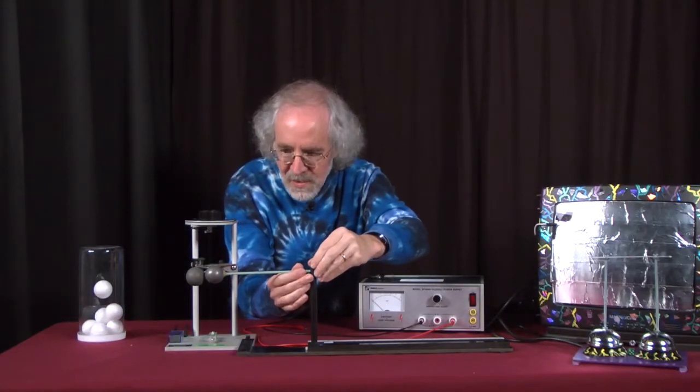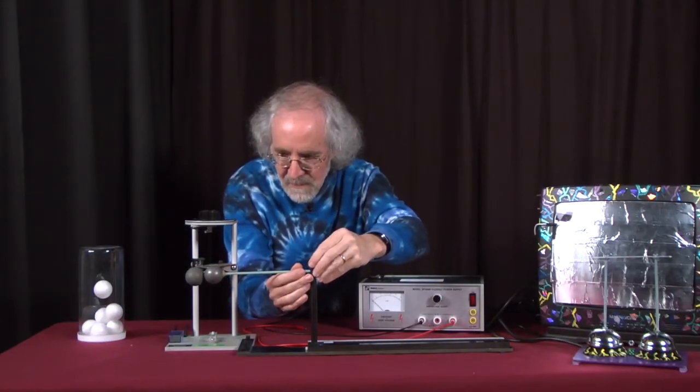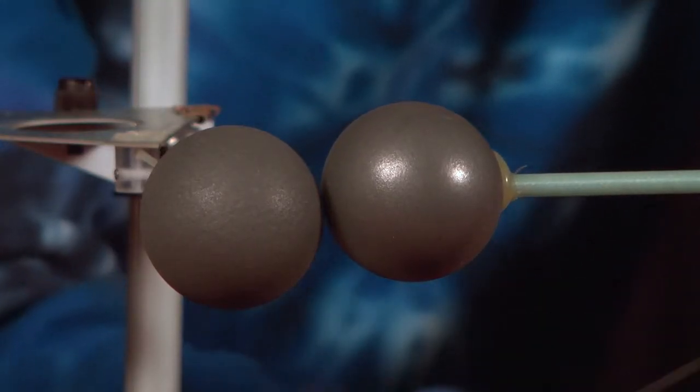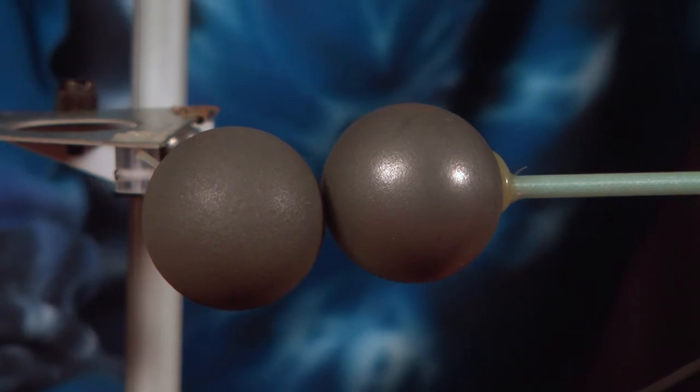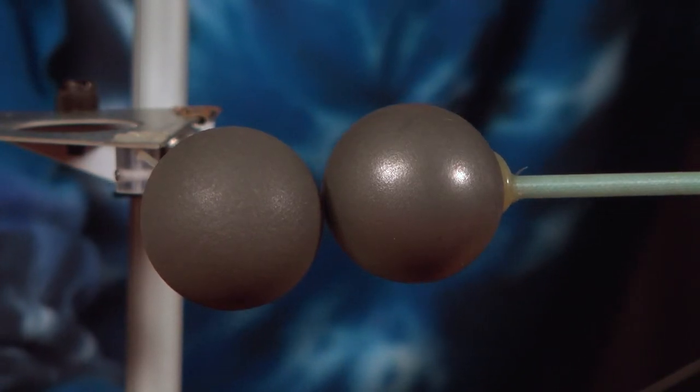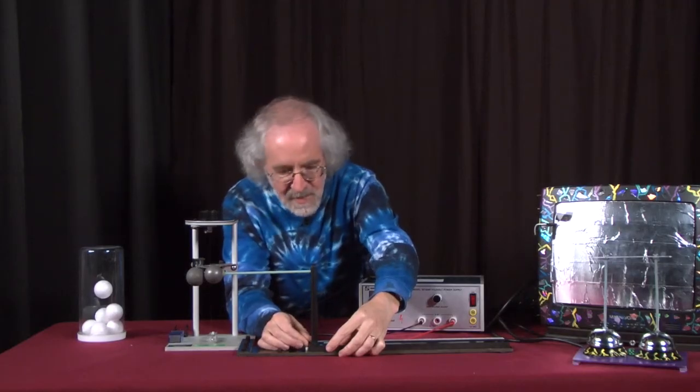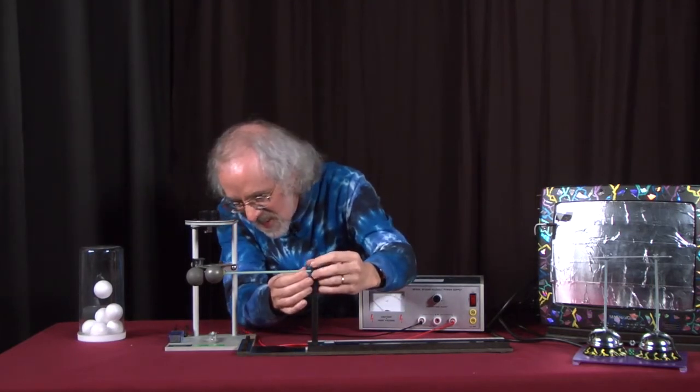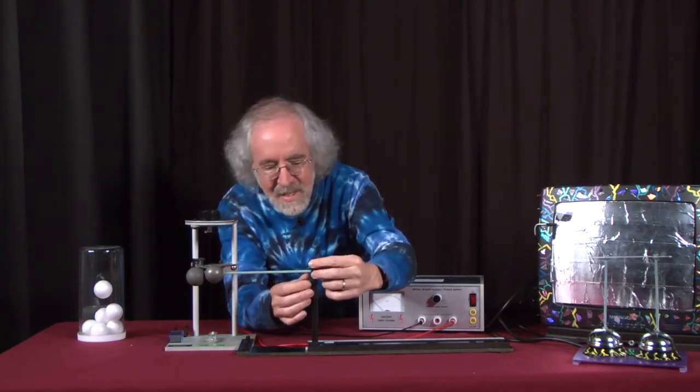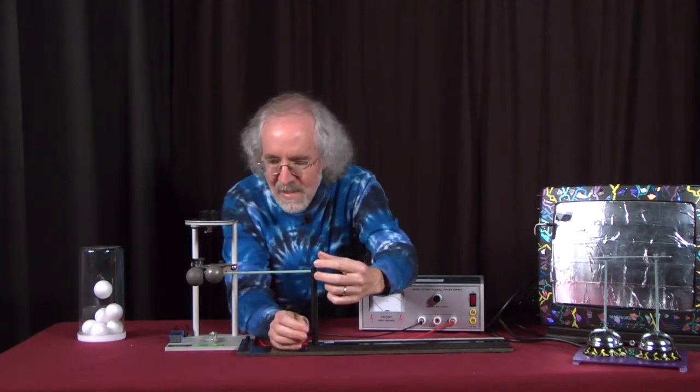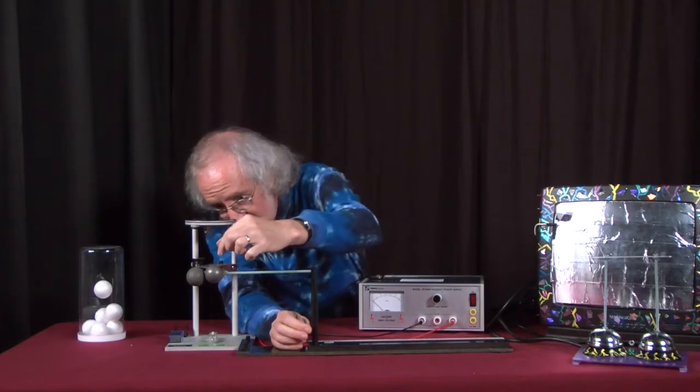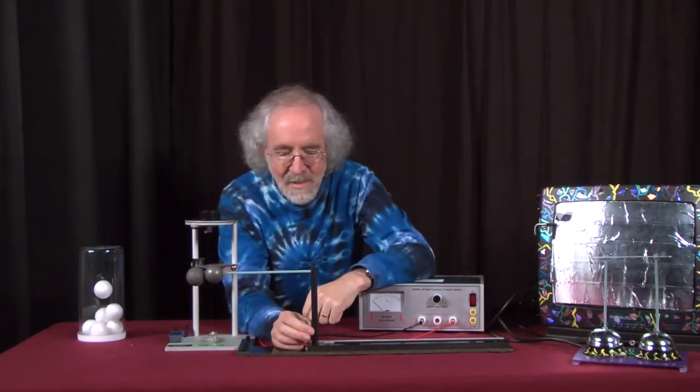Now let's make the two spheres just touch each other. So the reading on the scale is going to give us the distance between the centers of the spheres. And the spheres have some size to them. So right now, the distance between the centers of the spheres is about three centimeters.